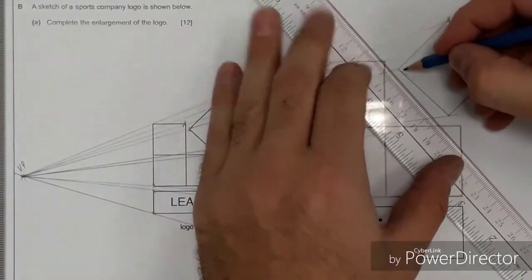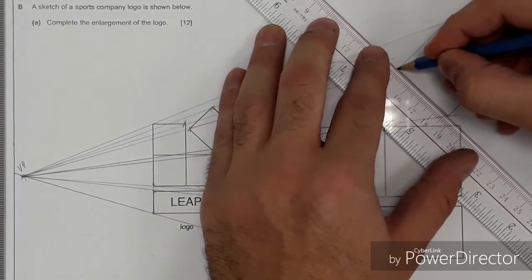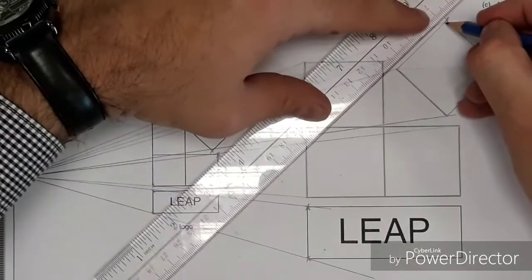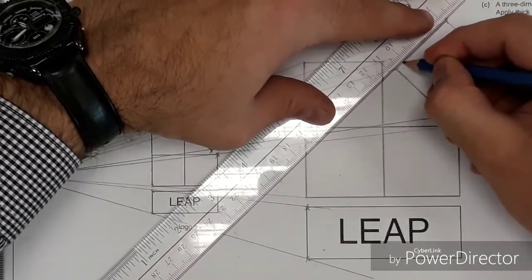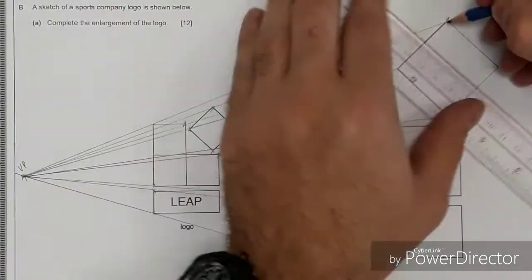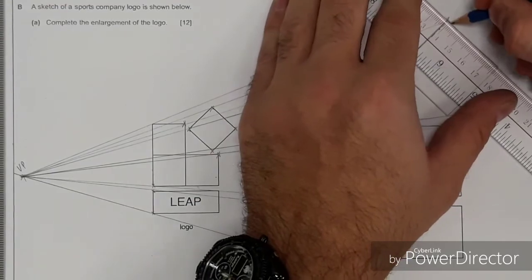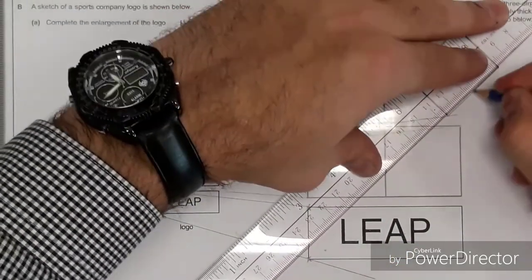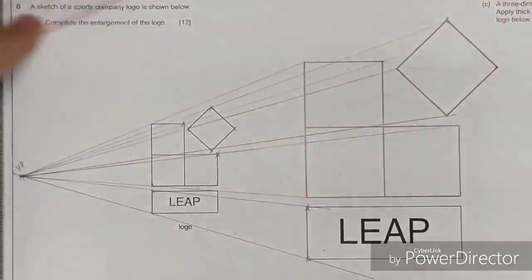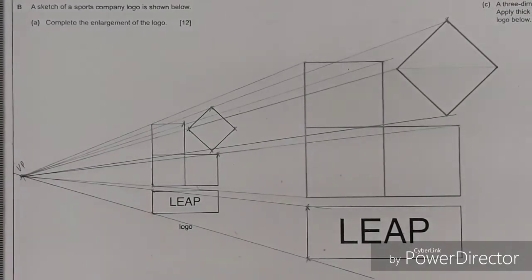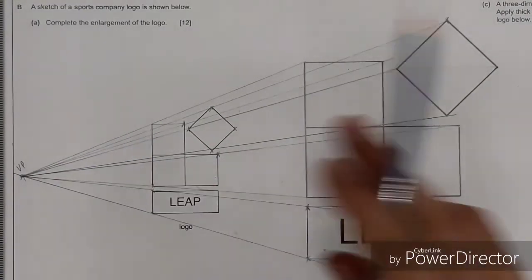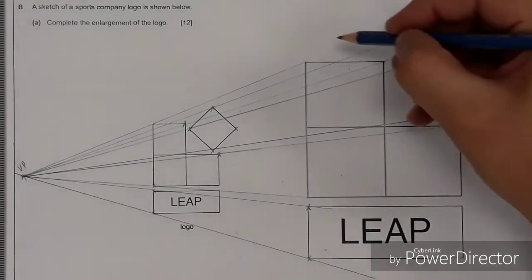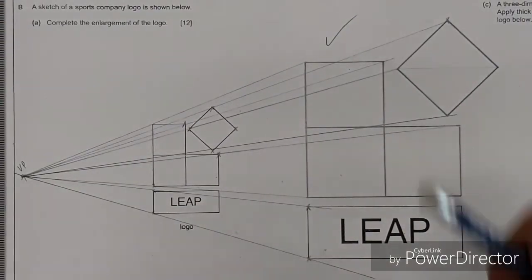This has come up a few times before — Cambridge like to use enlargement using one-point perspective, so it's a very good technique to learn and practice before the exam. There we have it — a perfect enlargement of the logo. We don't need to know the scale because we already had a reference point. Have a go yourselves, good luck.